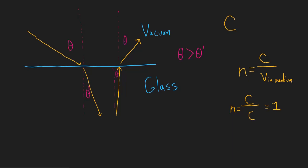So n in a vacuum equals 1. What about n in air? It turns out that n in air is the speed of light in a vacuum over the speed of light in air. The velocity of light in air is very, very close to c, so the value approximates to 1 — something like 1.00001. We just approximate it to about 1, so n in air is still 1 more or less. But there are other materials where n is quite a bit higher.